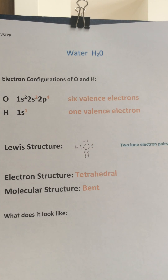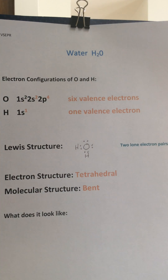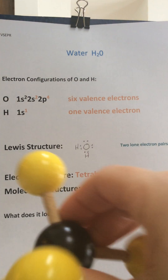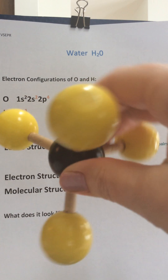What does this do to the electron structure and the molecular structure? Well, the electron structure doesn't change — it is still a tetrahedron. So just like we saw before, the electron geometry is like it is in methane: tetrahedral.